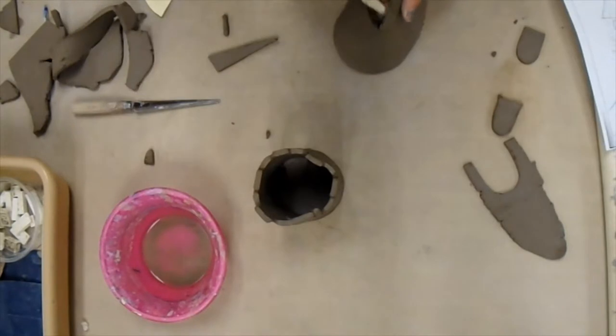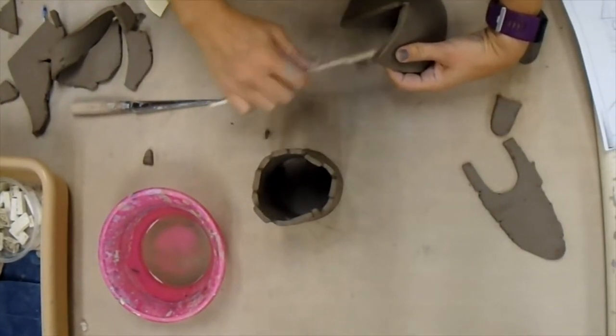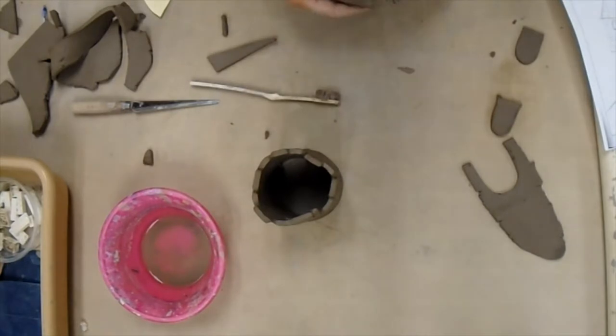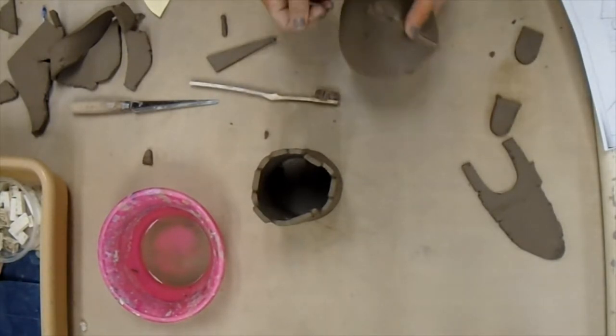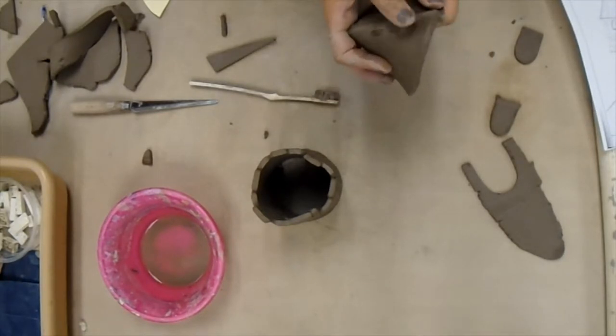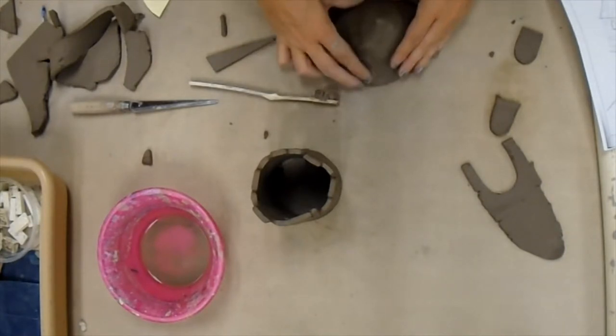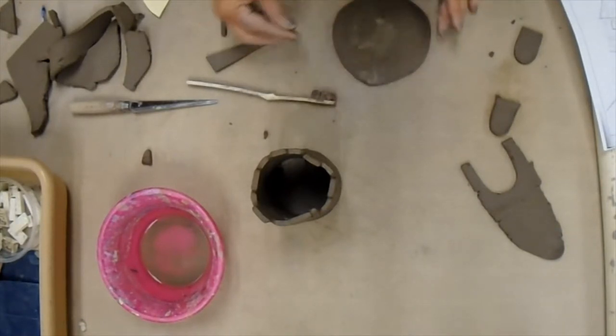I'm going to take my toothbrush, score and slip, score and slip, stick these together. Then I can always do some trimming, and when I smooth, I can smear this clay to cover the seam. That's the beginning of my cone.